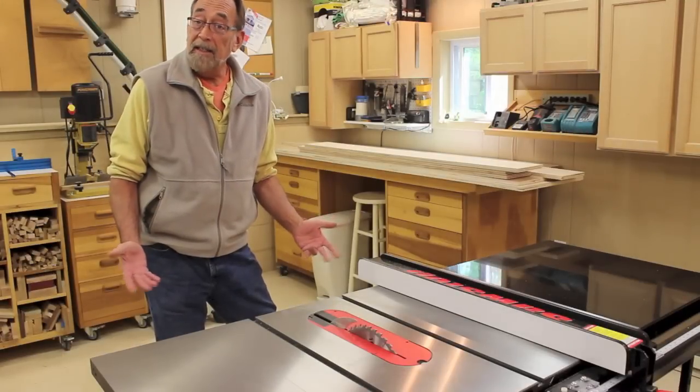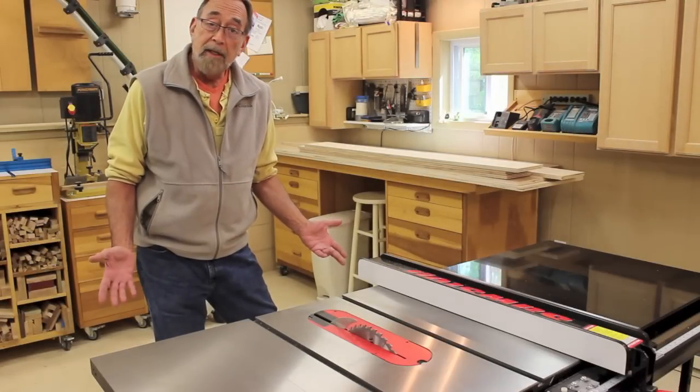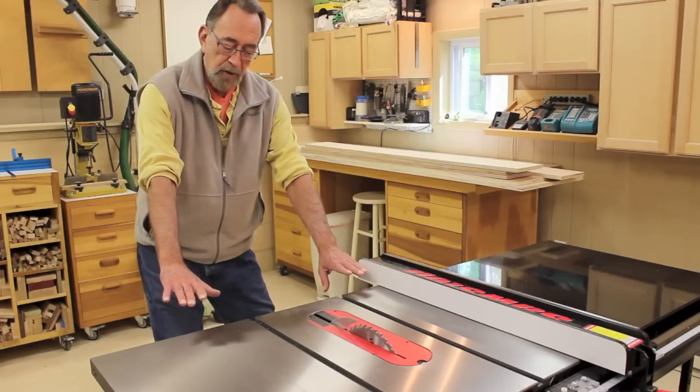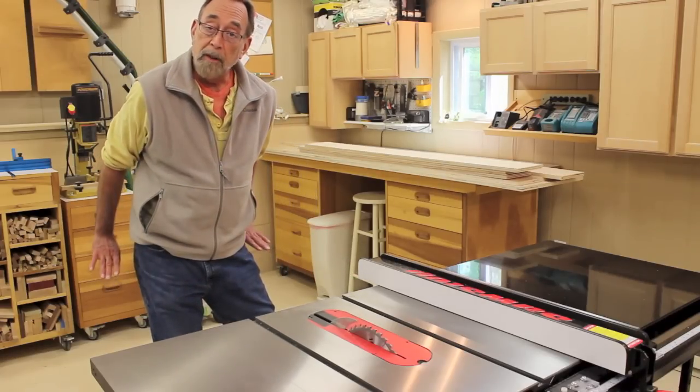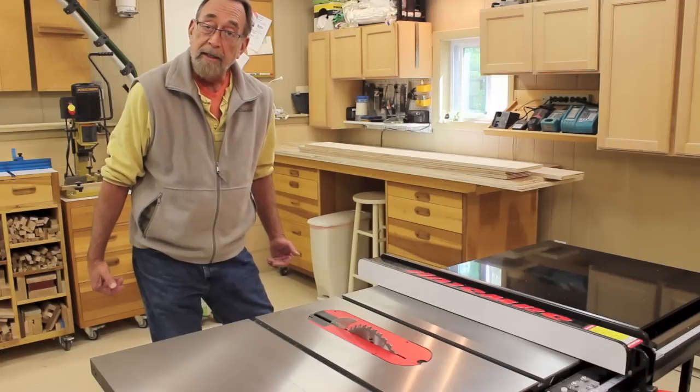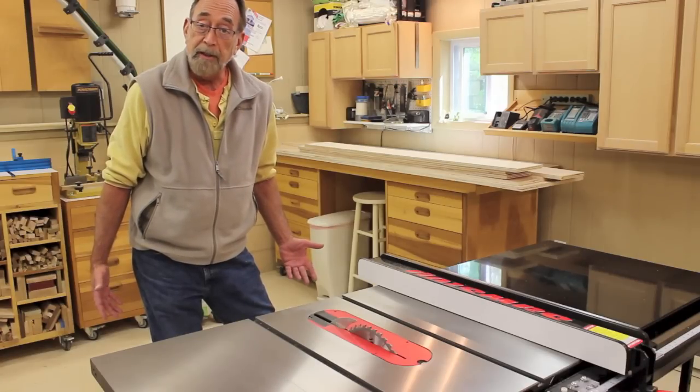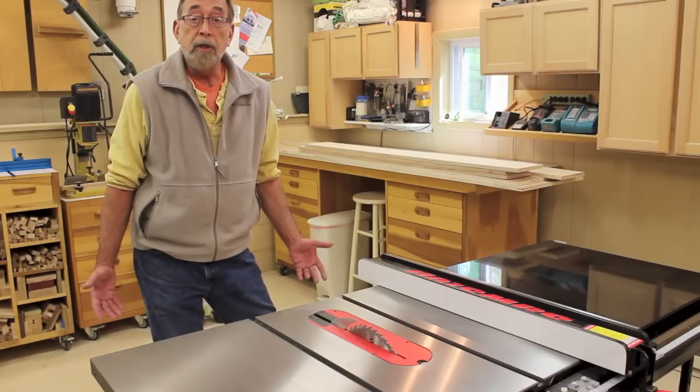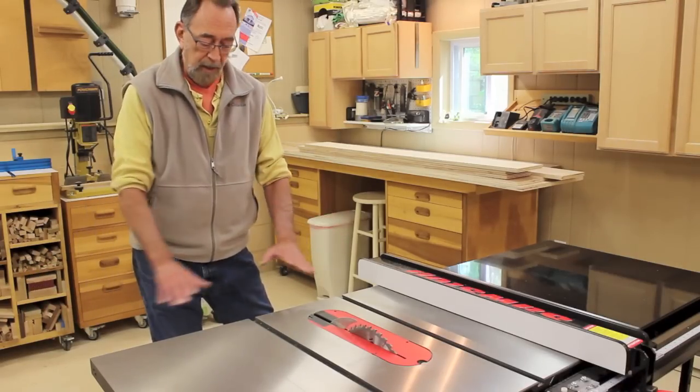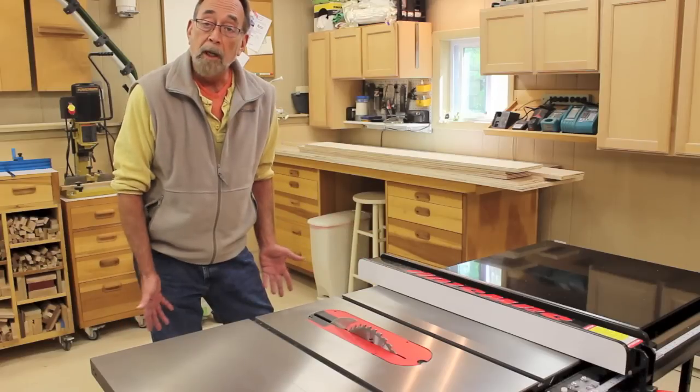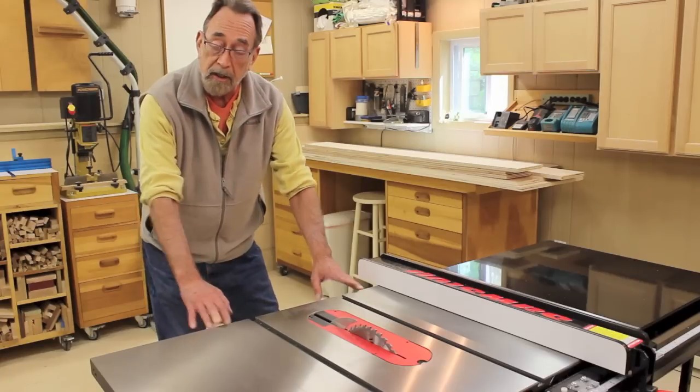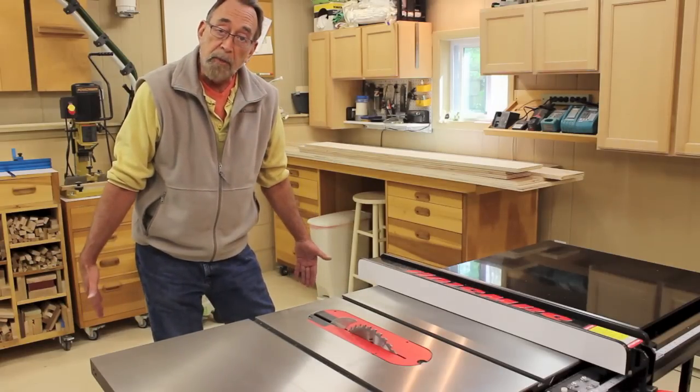So what exactly is an outfeed table? Well, it is just an extension of the top of the table saw so that longer boards have a place to slide as you go through and make the cut. It's safer and more convenient. And an outfeed table can be extremely simple. It is, after all, just a table. It can be a flat surface with four legs. Or it could be attached at this side next to the saw and have two legs supporting it out here.